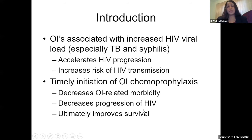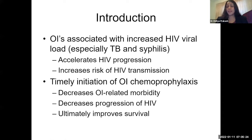The bottom line is that opportunistic infections are associated with increased HIV viral load, especially in OIs like tuberculosis and syphilis, and that accelerates HIV progression and increases risk of transmission. Timely initiation of OI chemoprophylaxis and appropriate therapy of OIs decreases OI-related morbidity, decreases the progression of HIV, and ultimately improves survival. It is imperative to diagnose, treat, and importantly prevent these infections — and it really starts with getting patients on ART.